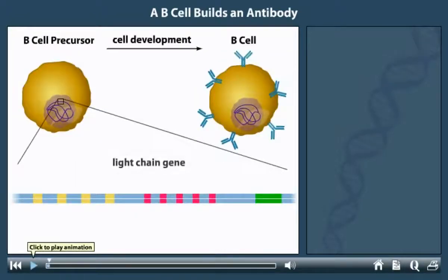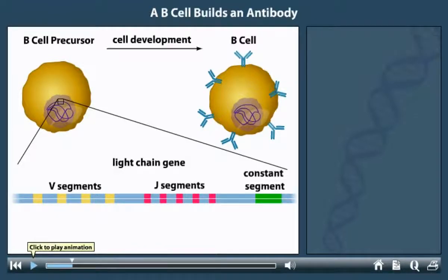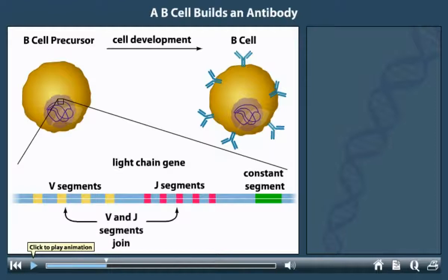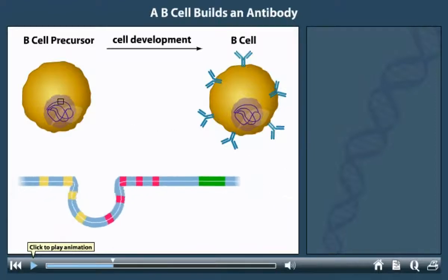A light chain gene consists of several families of coding regions called V, J, and constant segments. In a B cell, only one segment from each family becomes part of a mature light chain gene. The gene is rearranged, beginning with the random selection and joining of a V and a J segment. The intervening DNA is discarded.